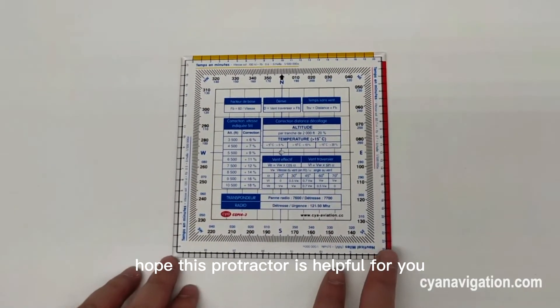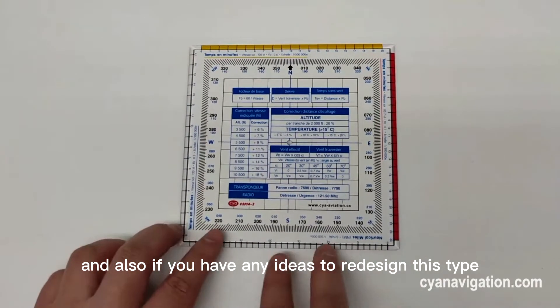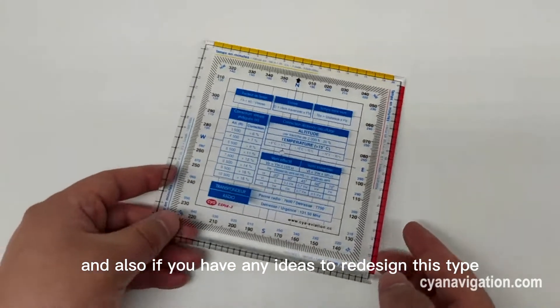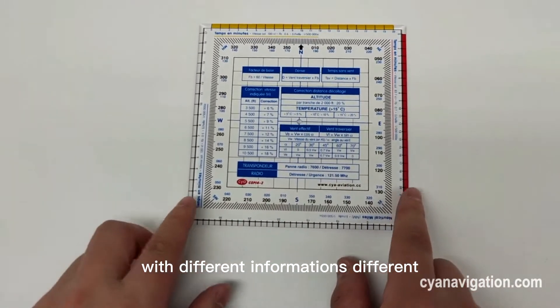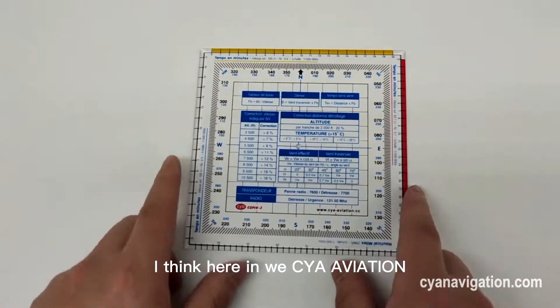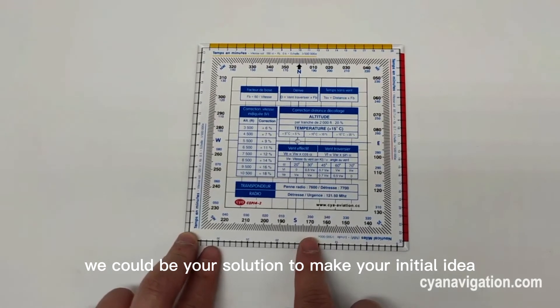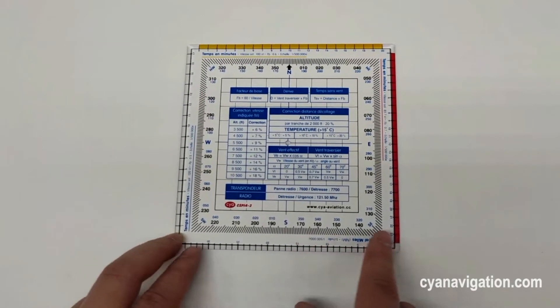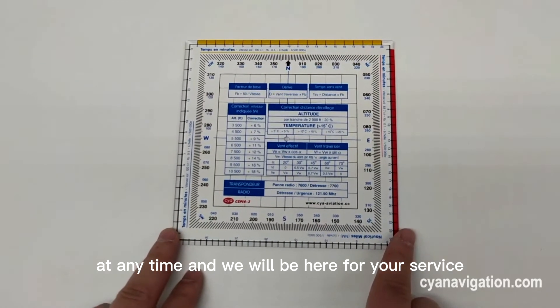I hope this protractor is helpful for you. And also if you have any ideas to redesign this type map protractor with different information, different designs, or the material, I think here in CYA we could be your solution to make your initial idea into reality. So you can call us at any time and we will be here for your service.